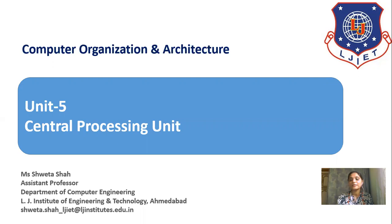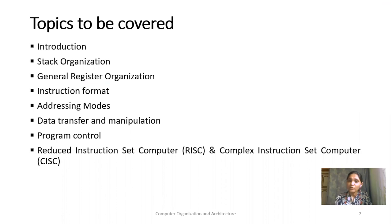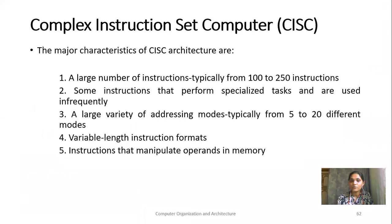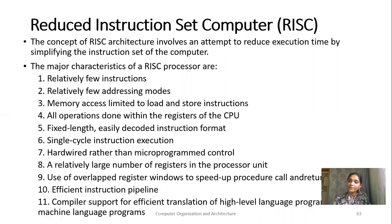In this unit, in the last session, we have seen the characteristics of Reduced Instruction Set and Complex Instruction Set Computer, that is known as RISC and CISC. One of the characteristics of the RISC architecture is that it uses an overlapped register window that speeds up the procedure of call and return. Let me see how this overlapped register window works.